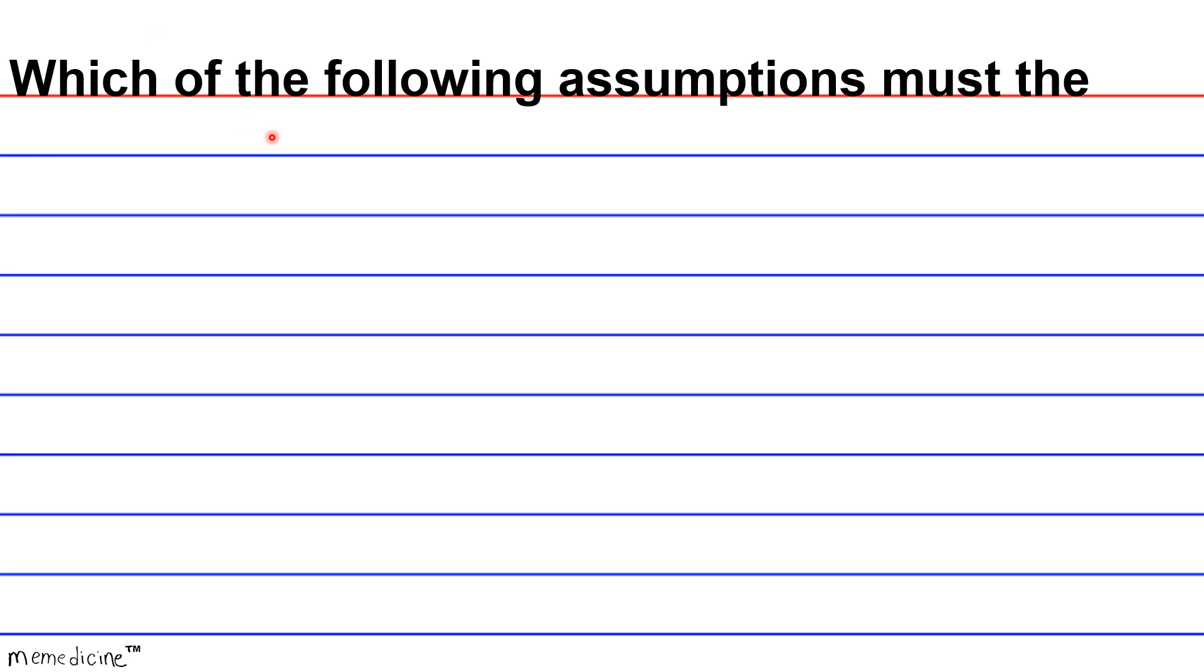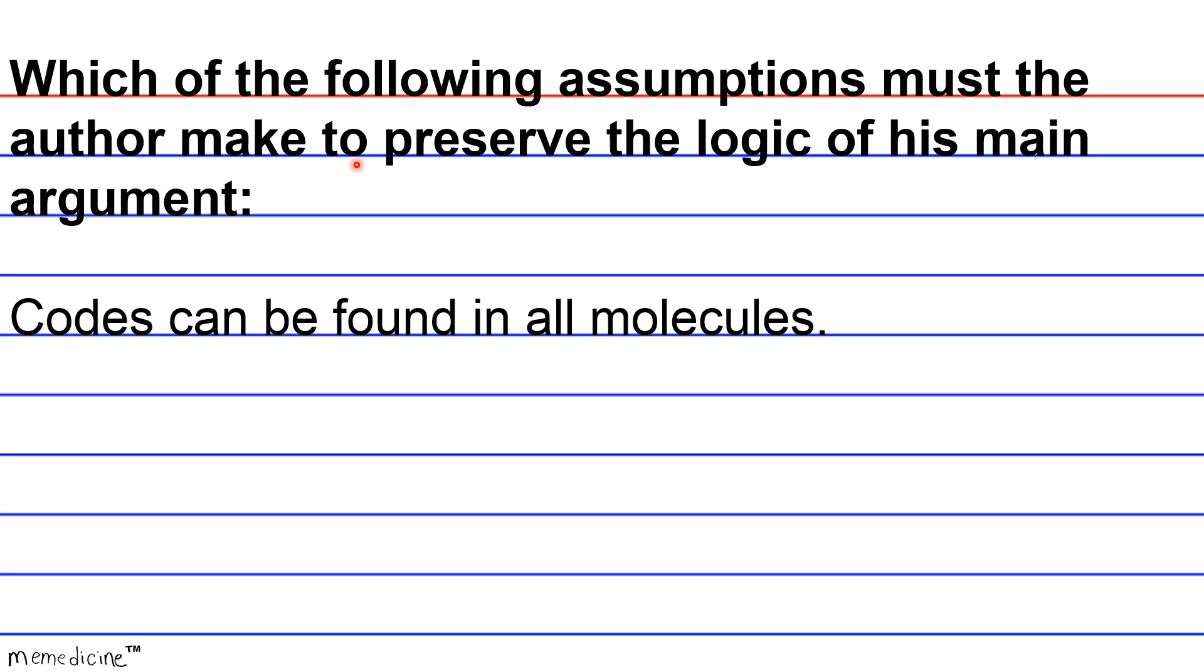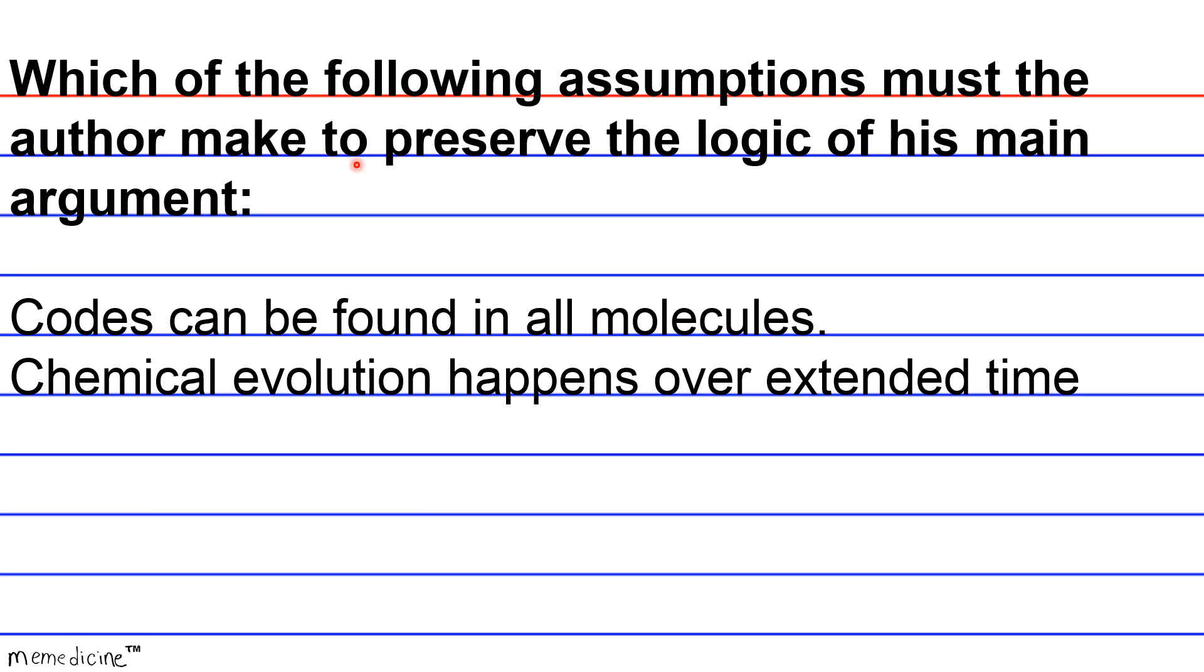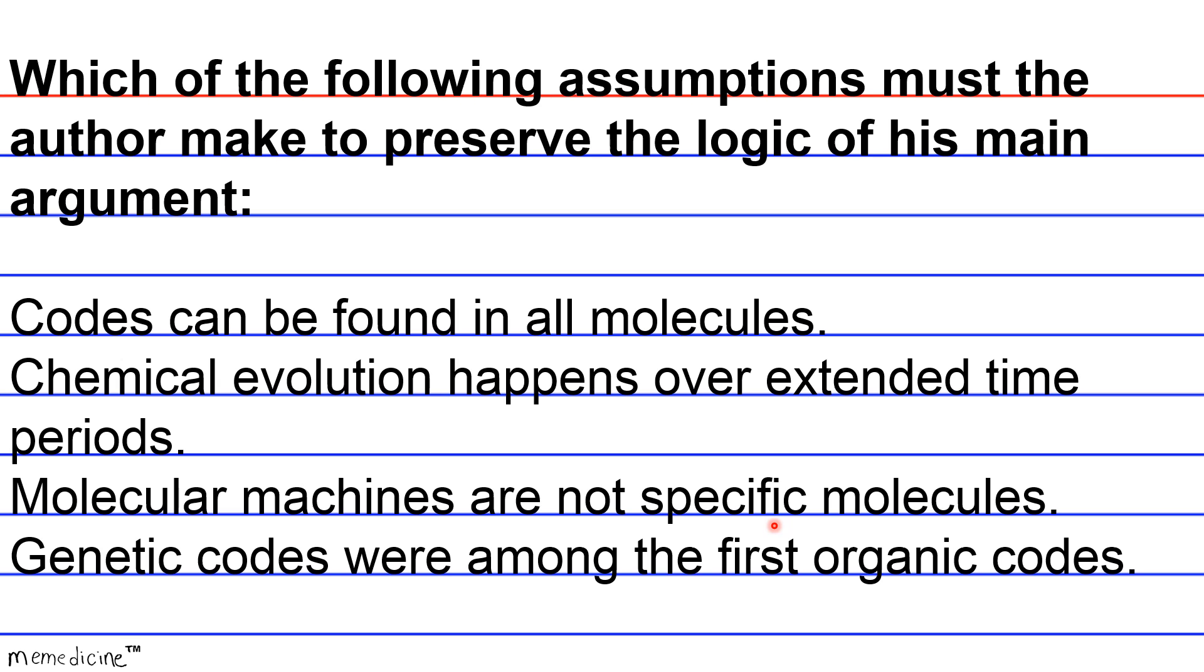Which of the following assumptions must the author make to preserve the logic of his main argument? A. Codes can be found in all molecules. B. Chemical evolution happens over extended time periods. C. Molecular machines are nonspecific molecules. D. Genetic codes were among the first organic codes. So really think about this, and definitely press pause if you need to.